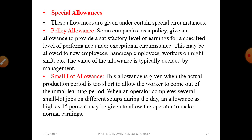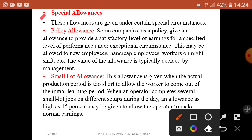Special allowances are given under certain special circumstances. The policy allowance is given by some companies to provide a satisfactory level of earning for a specified level of performance under exceptional circumstances. This may be allowed to new employees, handicapped employees, or workers on a night shift. The value of these allowances is typically decided by management.